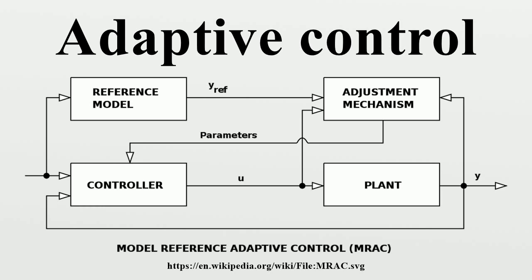Gradient optimization MRACs use a local rule for adjusting parameters when performance differs from the reference model, such as the MIT rule. Stability optimized MRACs and model identification adaptive controllers perform system identification while the system is running. Cautious adaptive controllers use current system identification to modify the control law, allowing for uncertainty. Certainty equivalent adaptive controllers take the current system identification to be the true system.